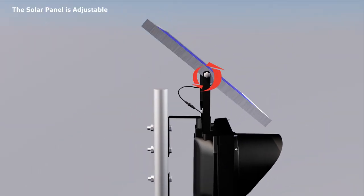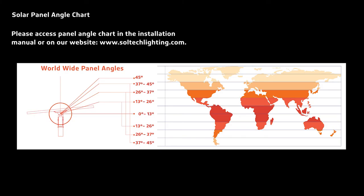The solar panel is adjustable. Once you pick a desired angle, tighten the screws. You can access the panel angle chart in the installation manual or on our website at www.soltechlighting.com.